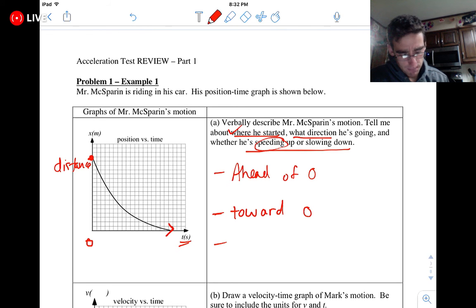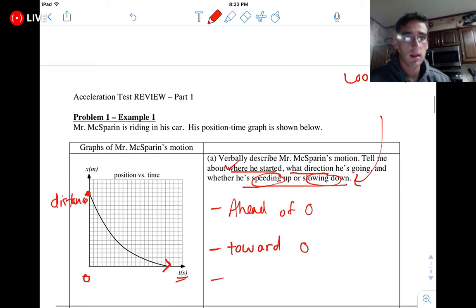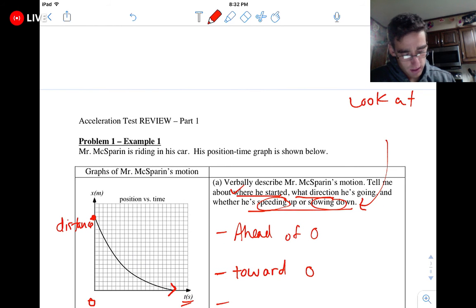And then it wants to know speeding up or slowing down. Now, a lot, lot, lot of you guys, you want to tell me that he's slowing down because it's going downhill. And that is wrong, okay? What we really have to look at here, for these two, we need to look at the slope.